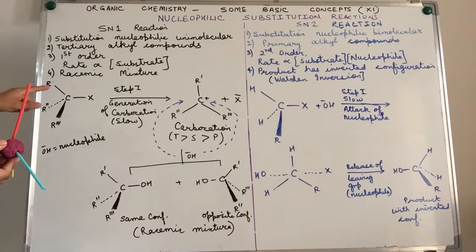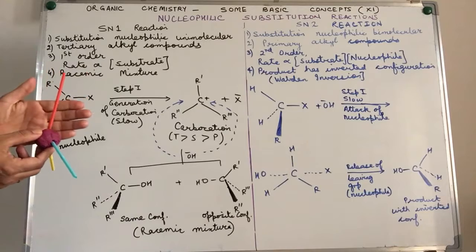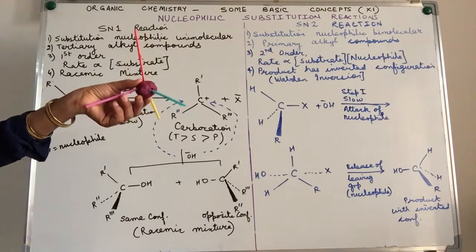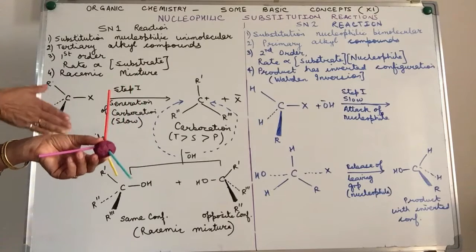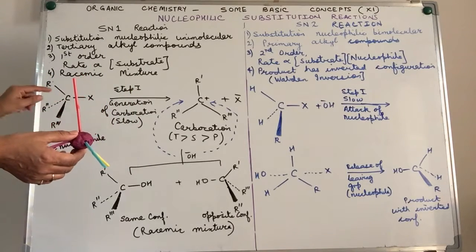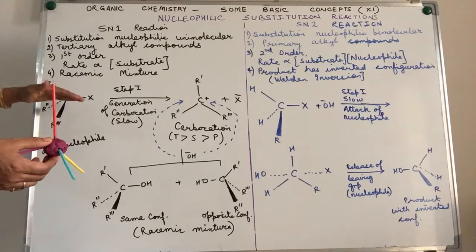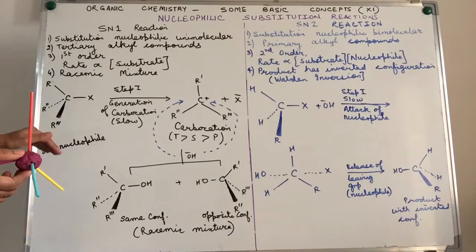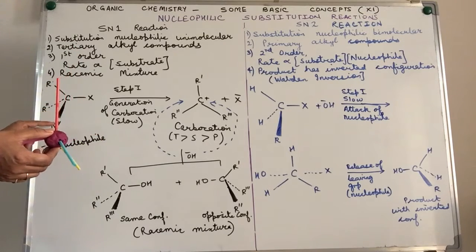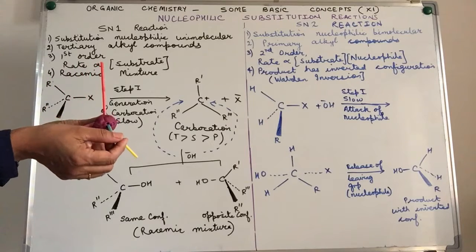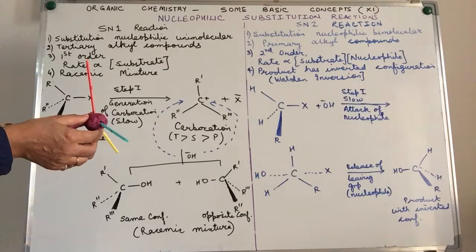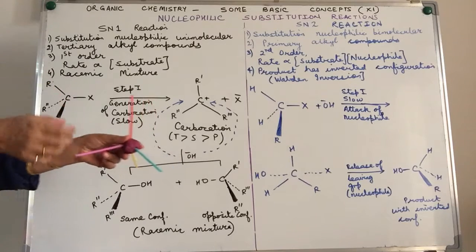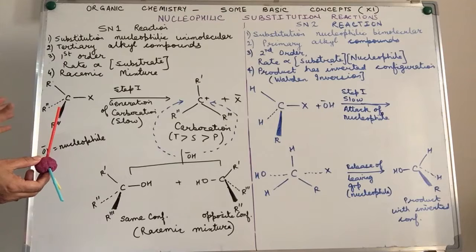This is a 3-dimensional structure — one group comes out of the plane of the paper, the other goes inside. Since we can't represent a 3D structure on paper, we use solid lines for bonds in the same plane, dotted lines for groups directed away from you, and a bold solid line for groups directed towards you. Now, when the nucleophile tries to attack, the central carbon is heavily guarded by the alkyl groups R, R'', and R'''.